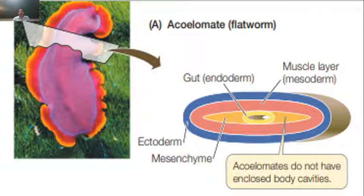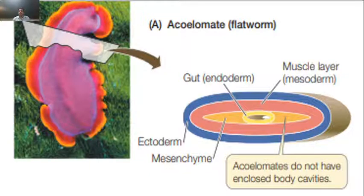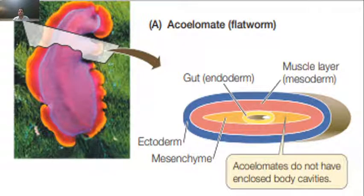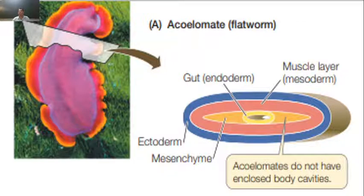First of all, in acoelomate animals, Praguha does not occur. As we see in the diagram, they do not have enclosed body cavities. There is no cavity present.